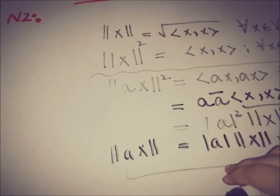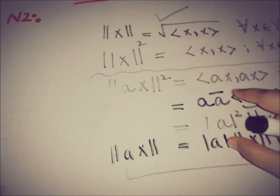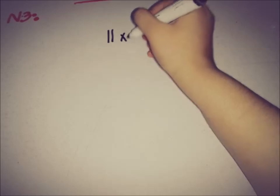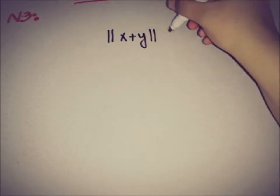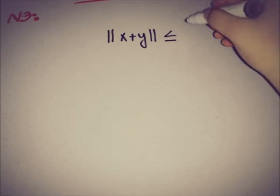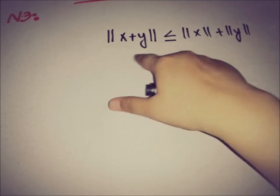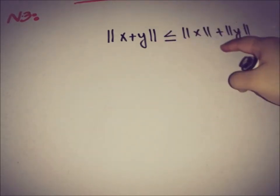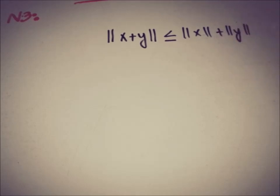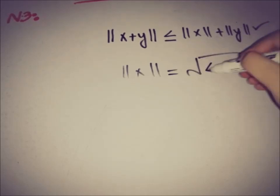We have satisfied the second property using the link between the norm and the inner product, so the inner product satisfies the second property as well. Now moving toward the third property: if we have two elements from the vector space, the norm of their sum is less than or equal to the sum of their individual norms. We will verify this inequality using the relation between the norm and the inner product.